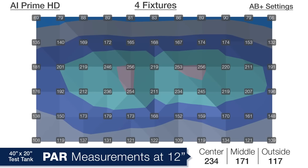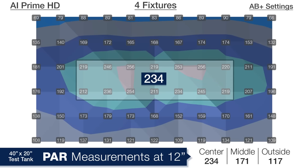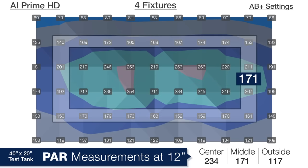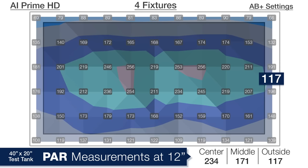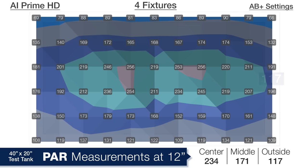Moving down to 12 inches deep in the tank we are seeing 234 PAR in the center of the tank, 171 in the middle ring, and 117 PAR on the outer edges. You will note the distribution from left to right is much more even in this configuration because of the overlap between the light sources. However the front to back is less even with a more significant fall off.